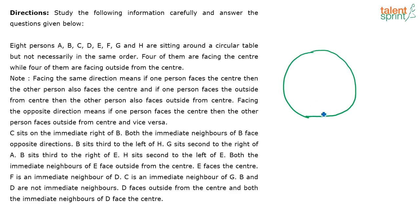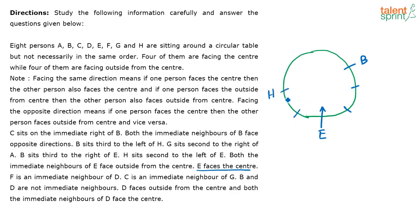I have placed E first. E faces the center — that is the first thing I fix. Then: C sits on the immediate right of B; B sits third to the right of E, so counting 1, 2, 3 from E that is where B is. H sits second to the left of E, so that places H.